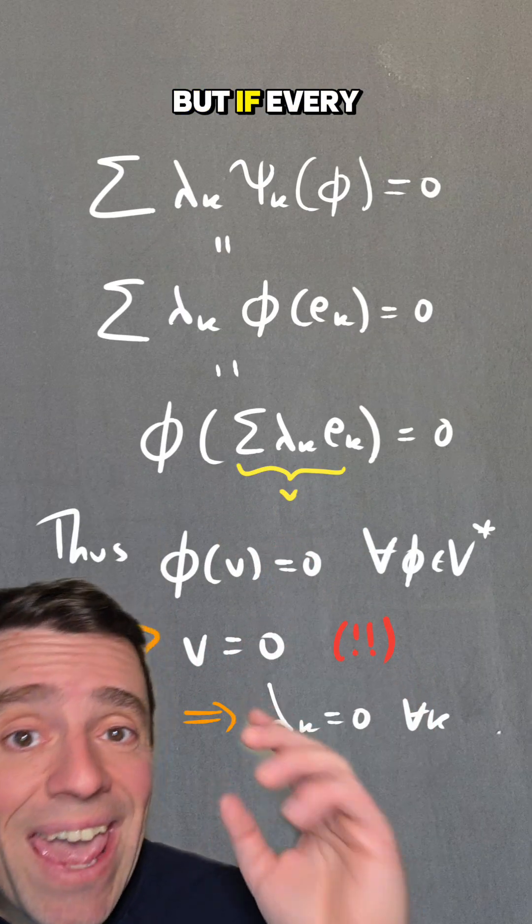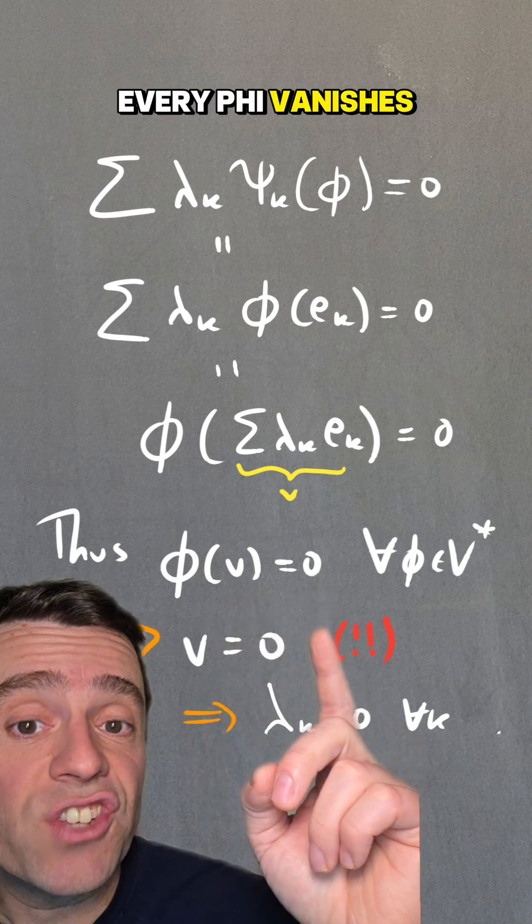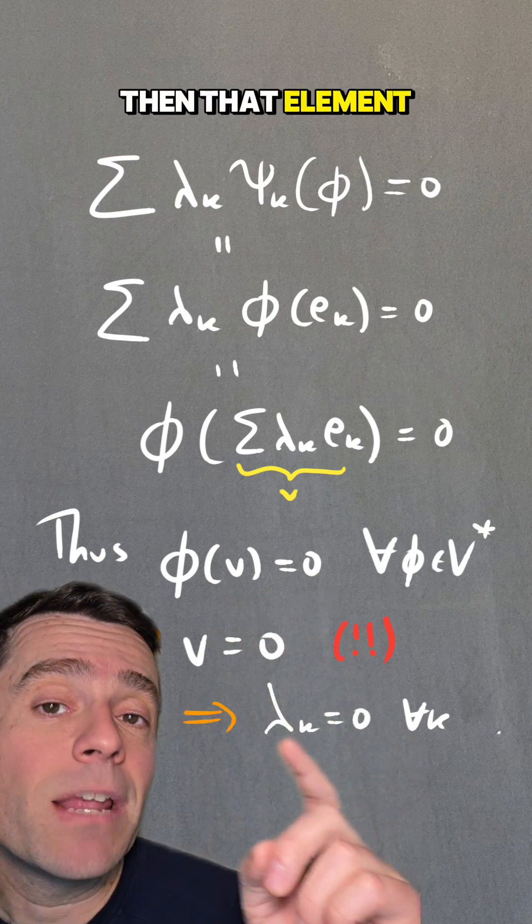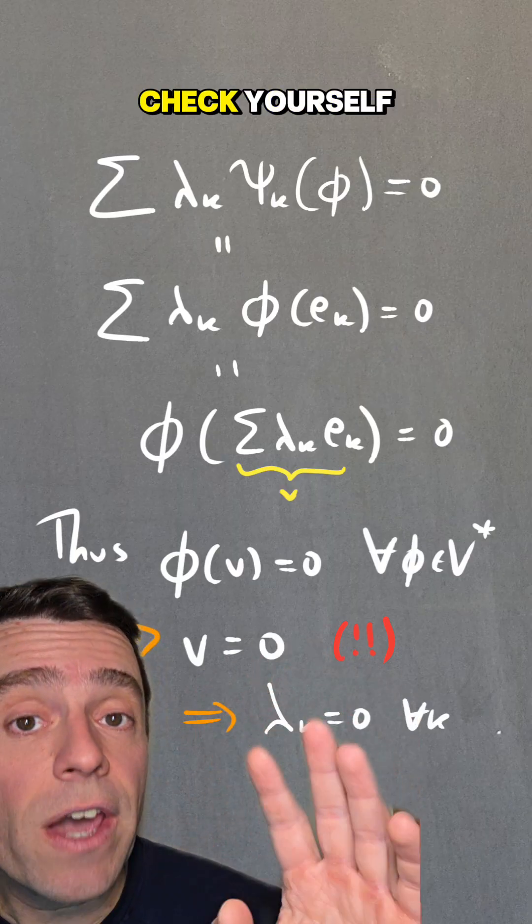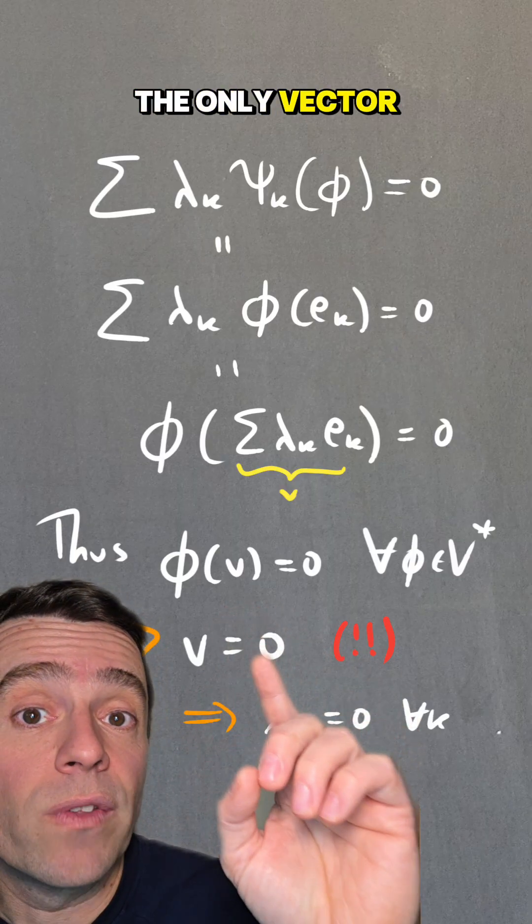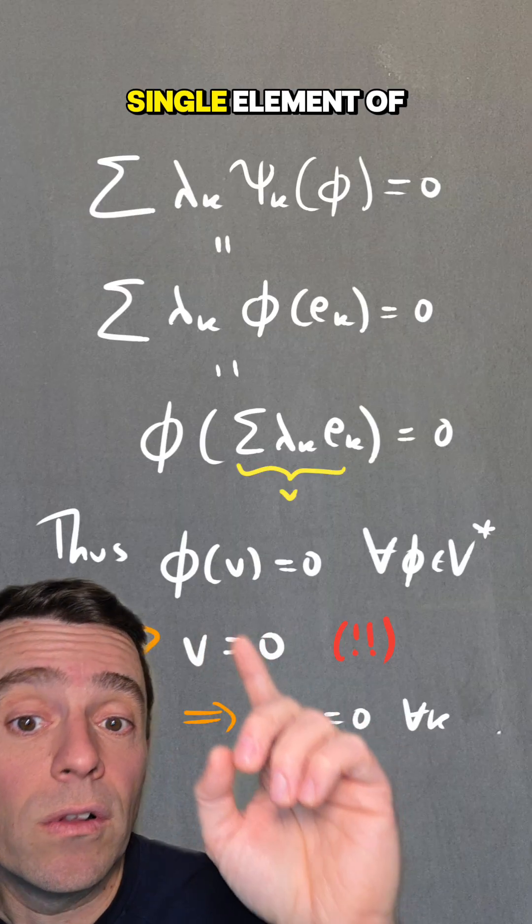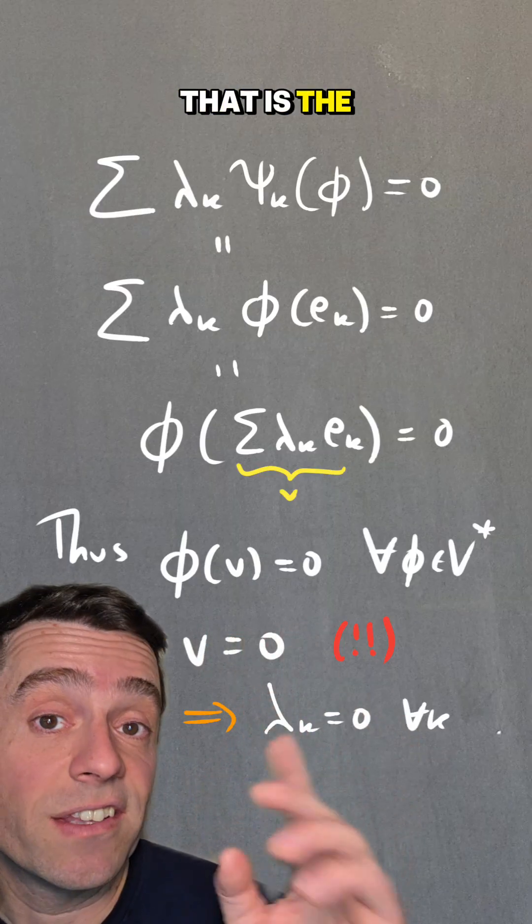But if every element of the dual, every φ vanishes at V, then that element V has to be zero. That's something you need to perhaps check yourself, that the only vector that makes every single element of the dual vanish is the zero vector.